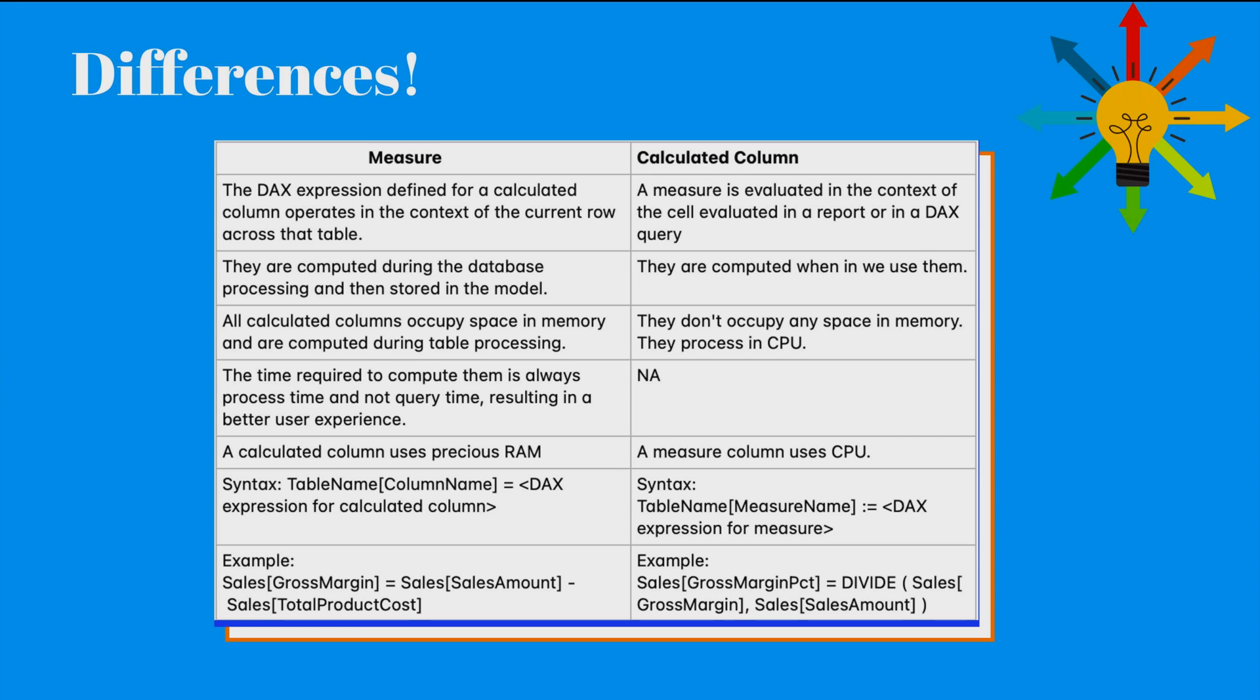The context of cell depends on user selections in the report or on the shape of the DAX query. For example, when you use SUM of the sales amount in a measure, you mean the sum of all the cells that are aggregated under the cell. Whereas when you use the sales amount from the sales table in a calculated column, you mean the value of the sales amount column in the current row only.